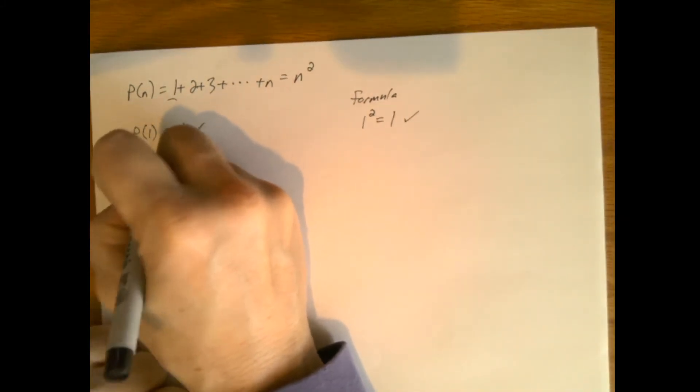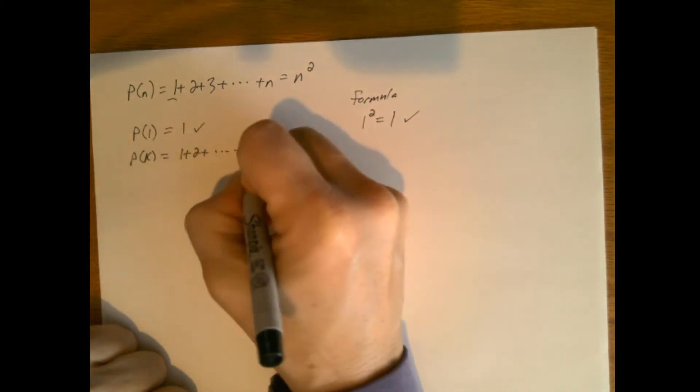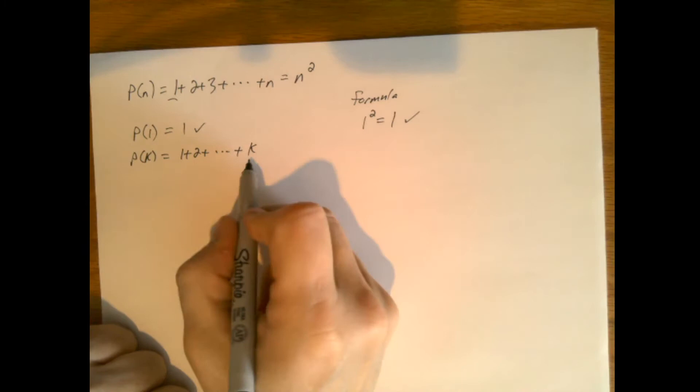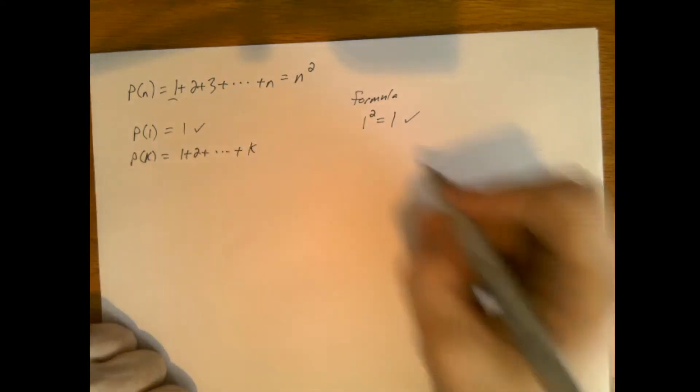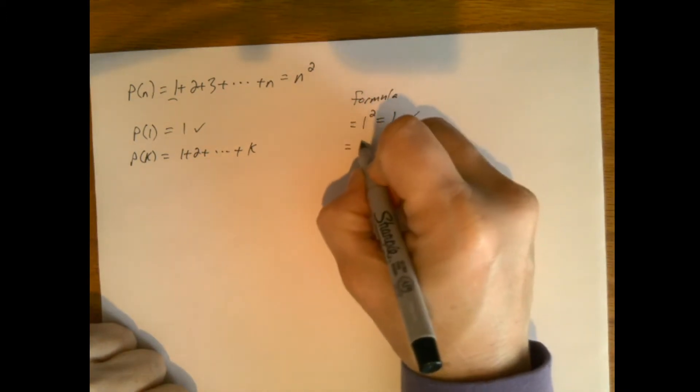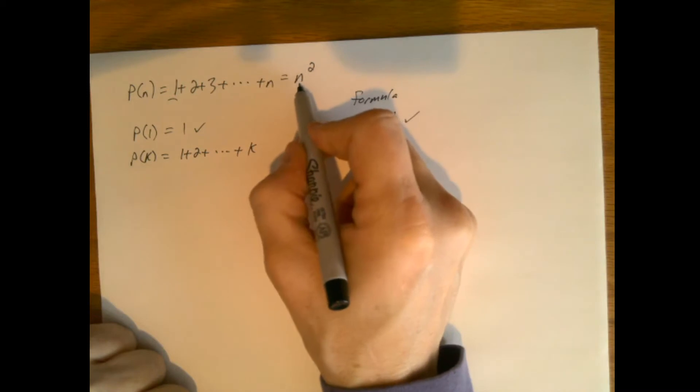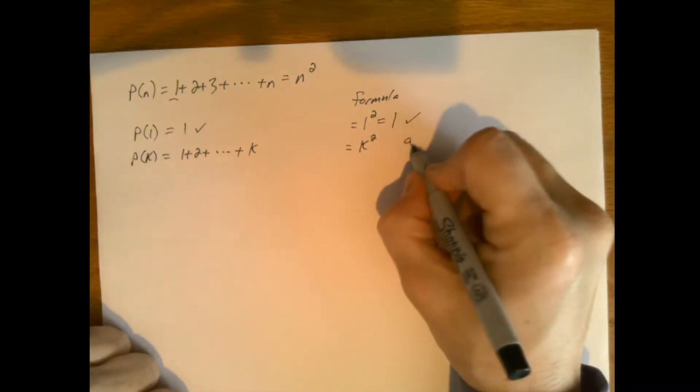P(k) then is 1 plus 2 plus dot dot dot plus k. That really is what it would have to be, 1 plus 2 plus 3 up to the kth value. And the formula says that this would be equal to k squared, right? n is now k. And so we assume this.